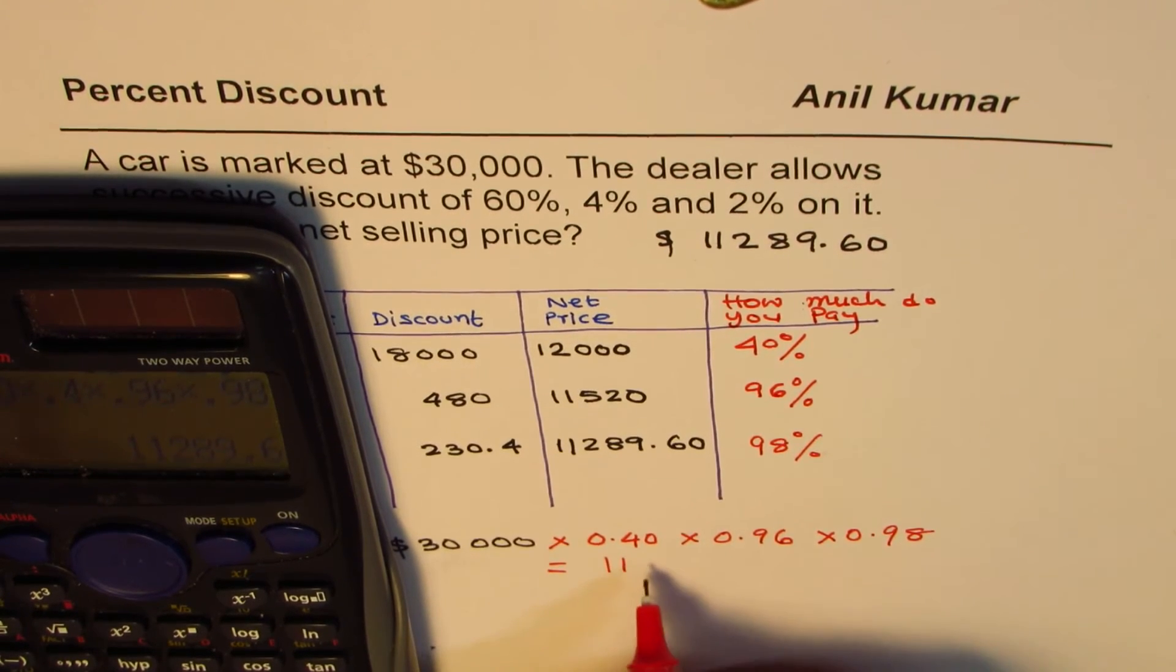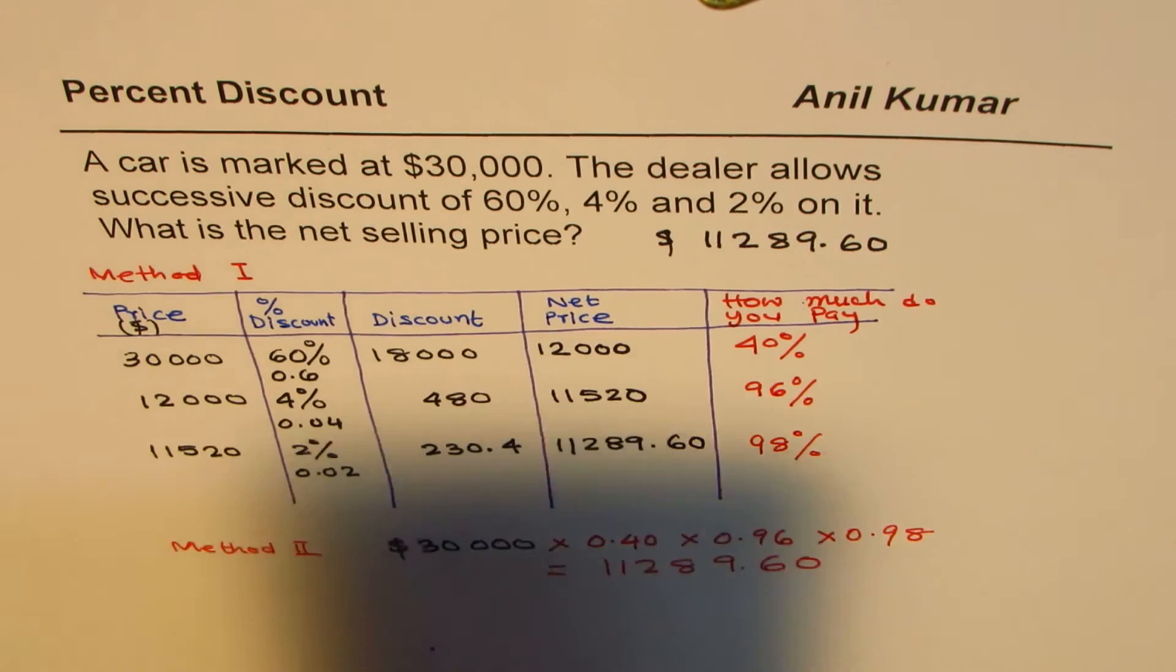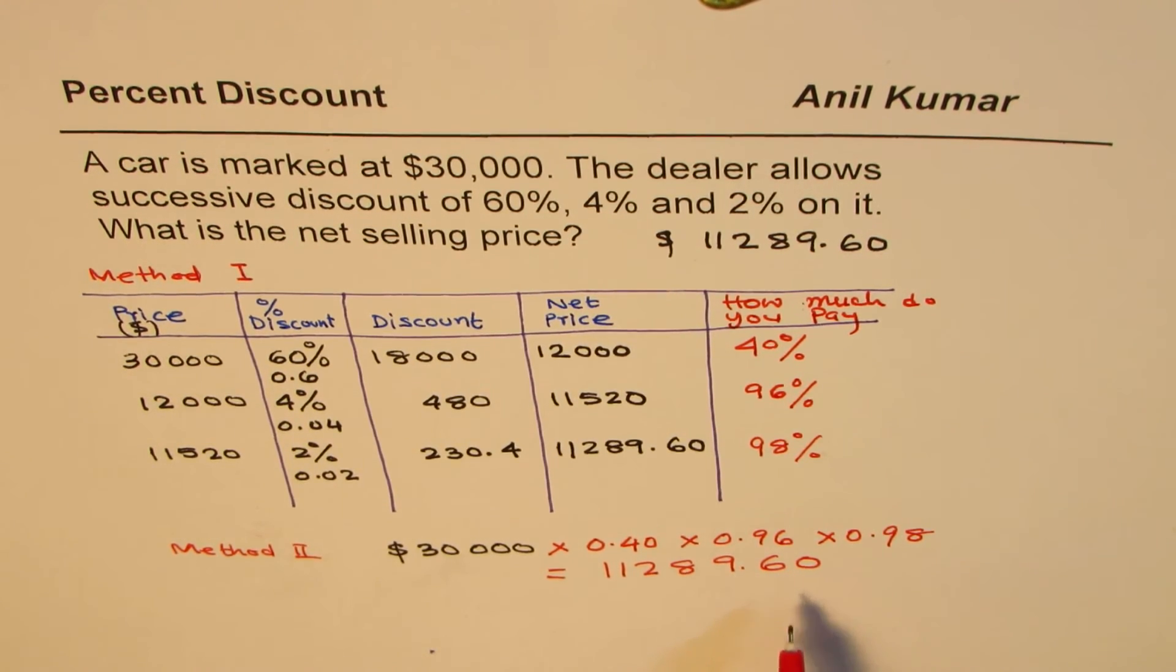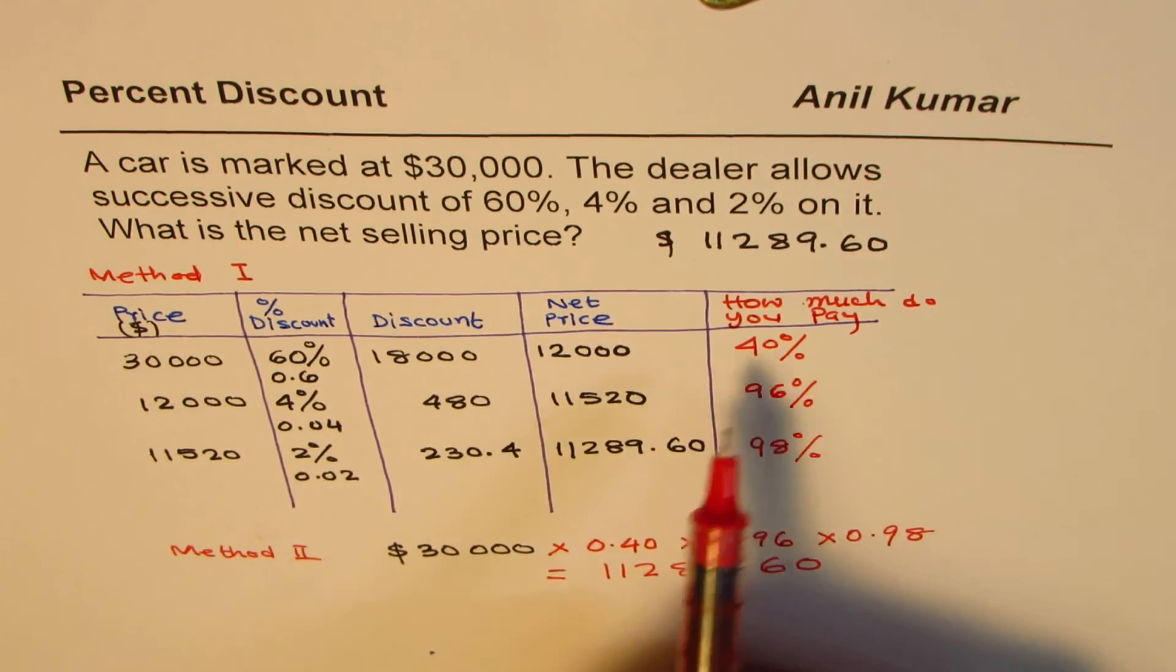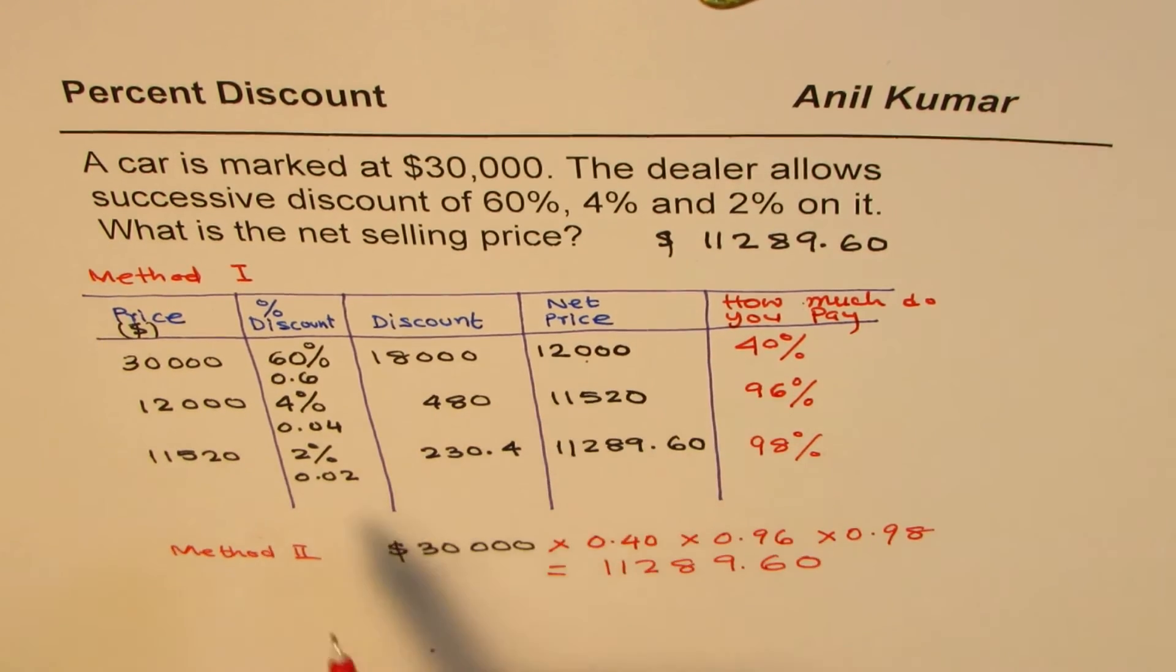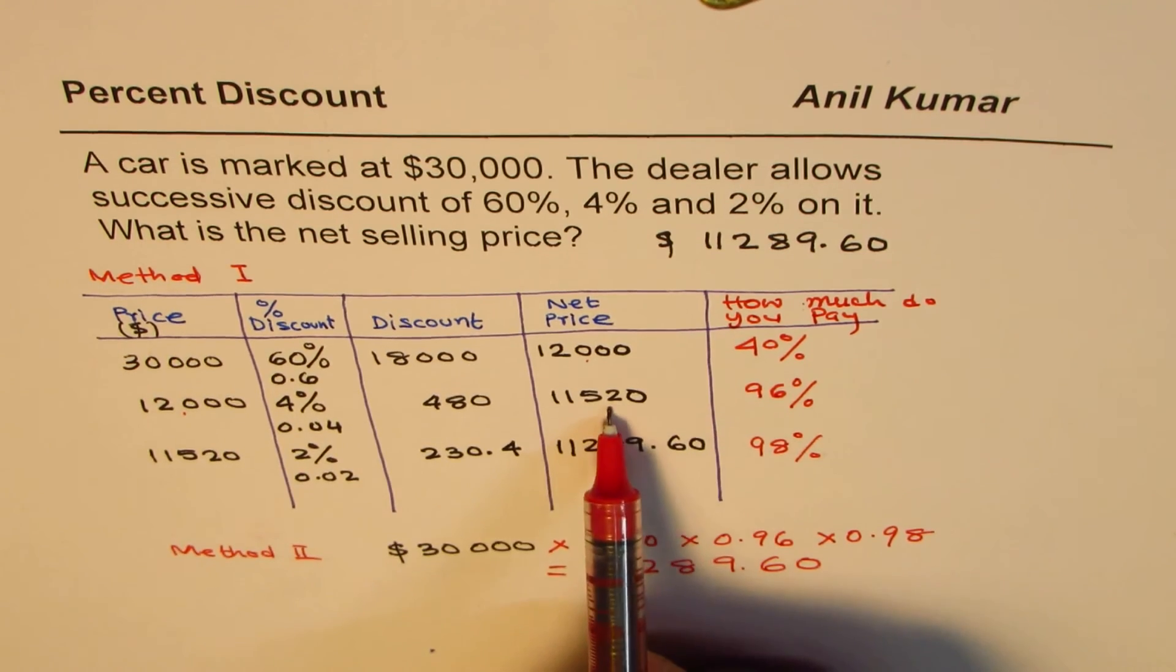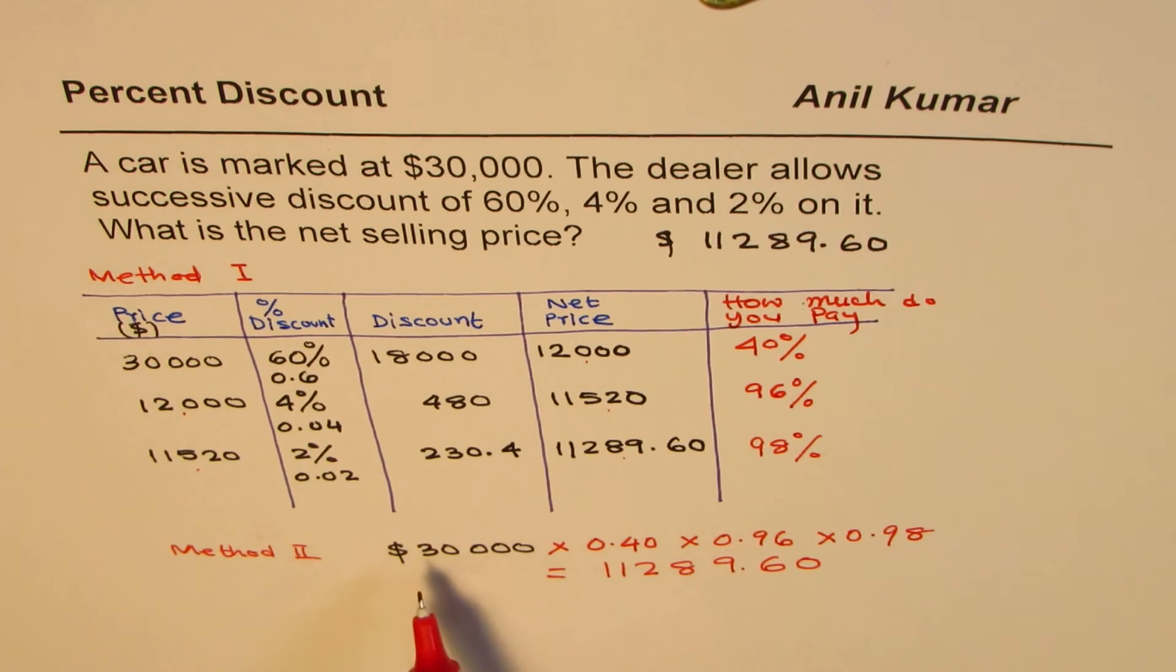We have 30,000 times 0.4 times 0.96 times 0.98 equals to, in decimals, we get an amount which is 11,289.6. That is how you can immediately find an answer, and that is how you should be doing for multiple choice questions. How much do you pay? You can check here for yourself: if you multiply 30,000 by 0.4, you will get this amount. If you multiply this by 0.96, you'll get that amount. If you multiply this by 0.98, you'll get that amount.